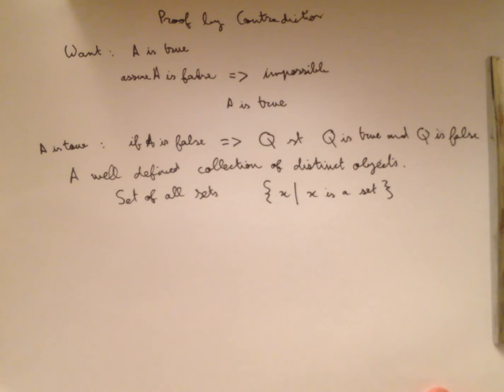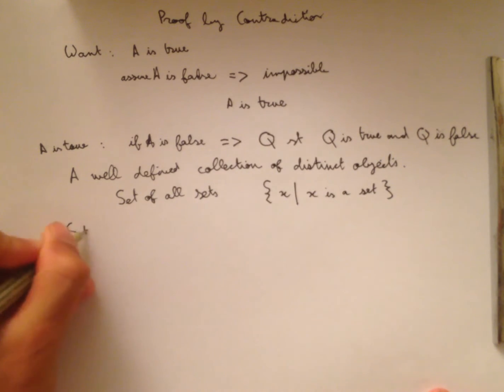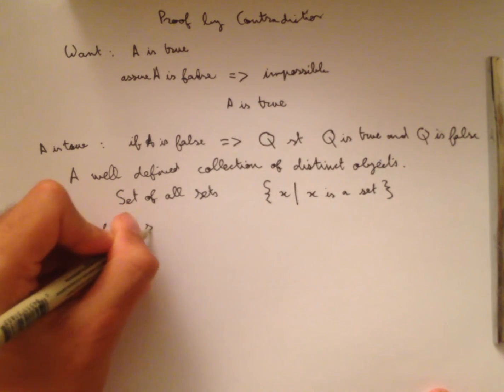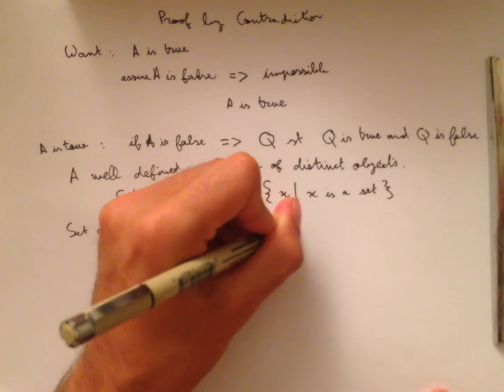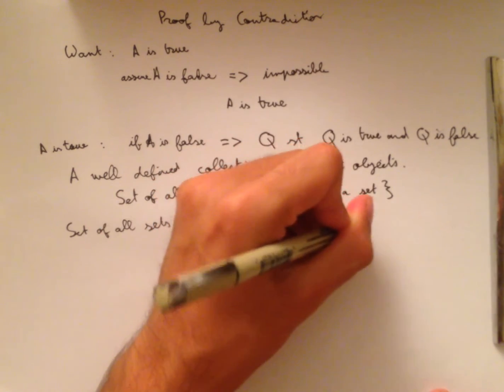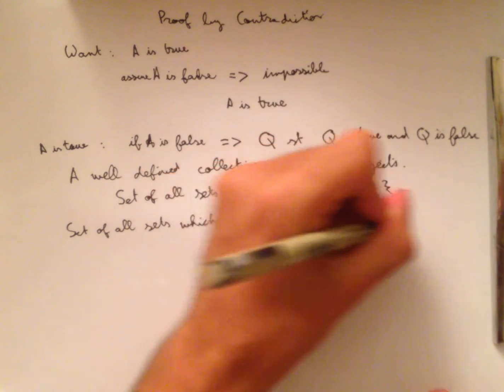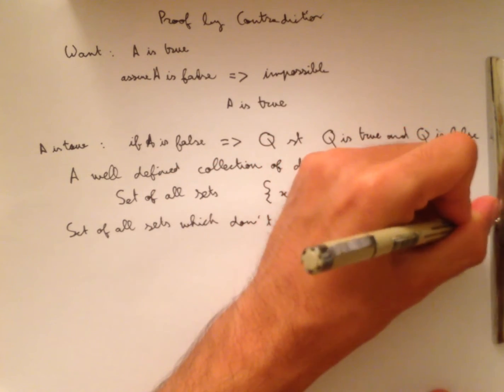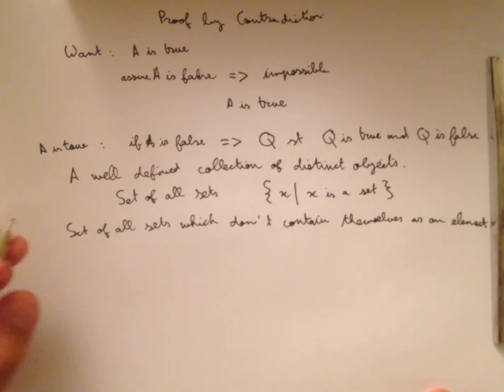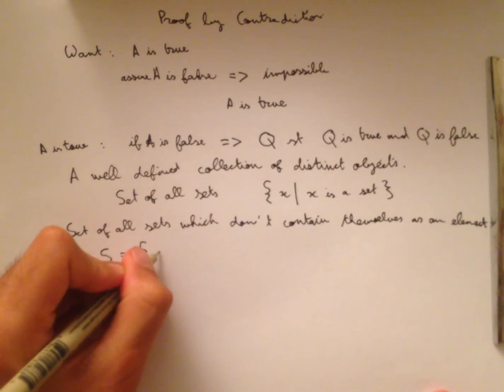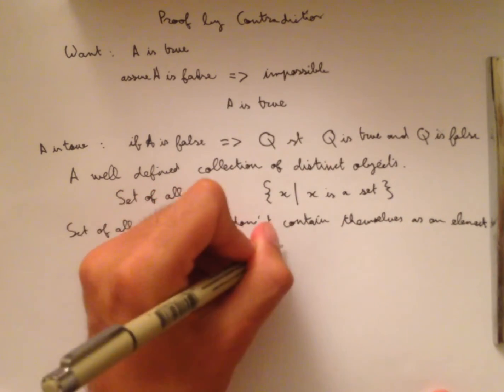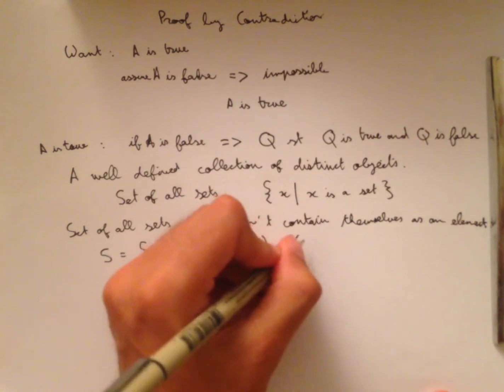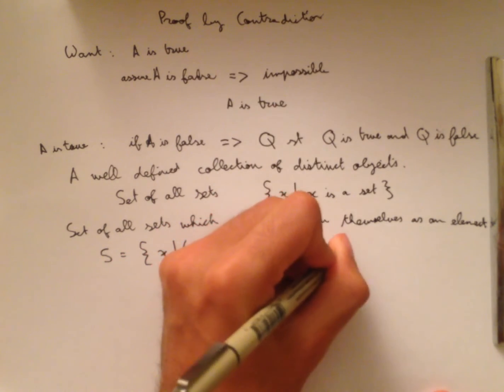So now let's look at another, even more pathological set: the set of all sets which don't contain themselves as an element. Well, in set builder notation, we're going to call this set S. We get the set of all x such that x is a set, and this little hat symbol means and, x is not an element of x.